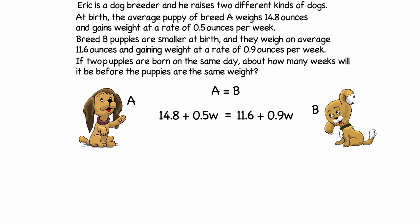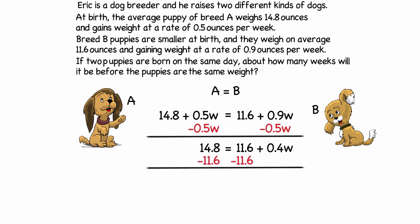Remember our goal is to get the variable on one side and everything else on the other. So first, I'm going to subtract 0.5W from both sides of the equation. And that would leave me with 14.8 is equal to 11.6 plus 0.4W. So I will next subtract 11.6 from both sides. So it gives me 3.2 is equal to 0.4W. Now I want to get W by itself by dividing each side by 0.4. And that would give me 8.